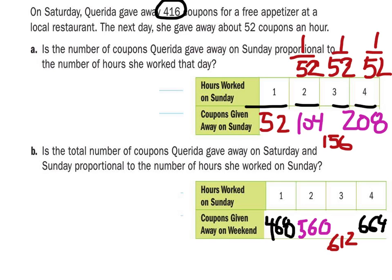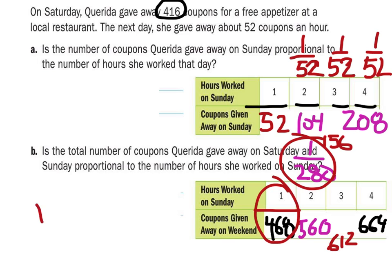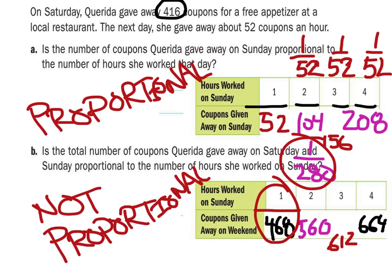Is this proportional? Well, 1 over 468 is just 1 over 468. What about 2 over 520? Well, that's going to give you 1 over 260. Is this equal to this? No, it are not. So this one would be not proportional. So there you go.